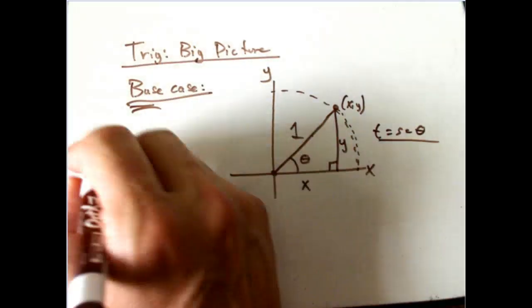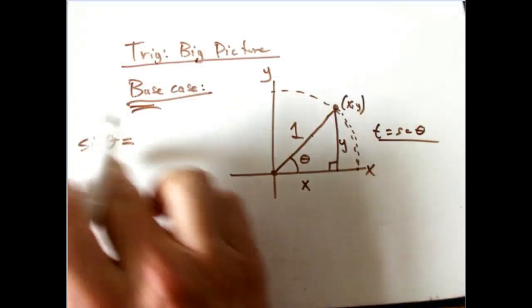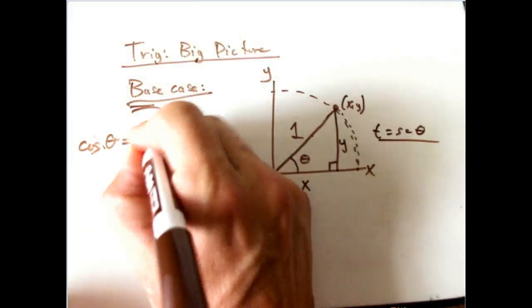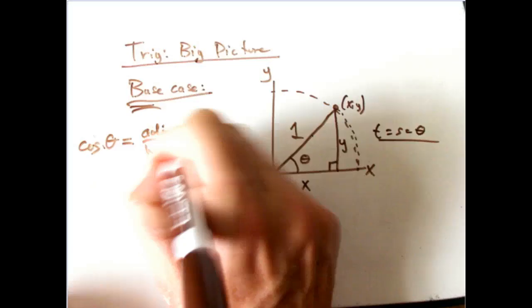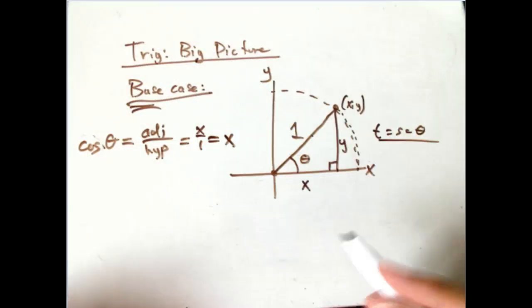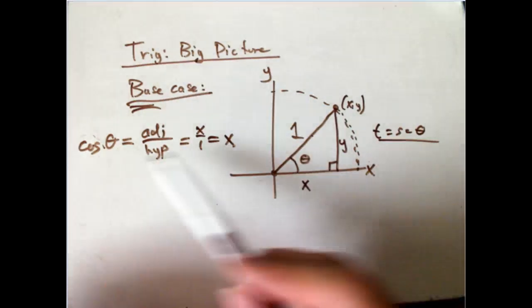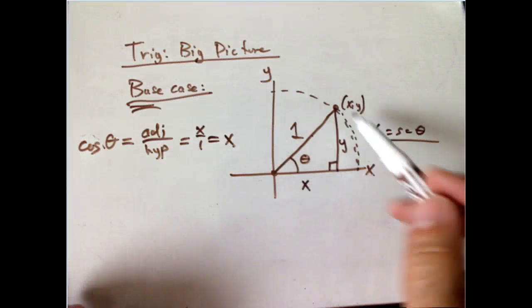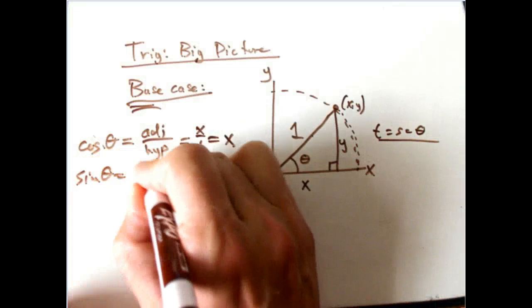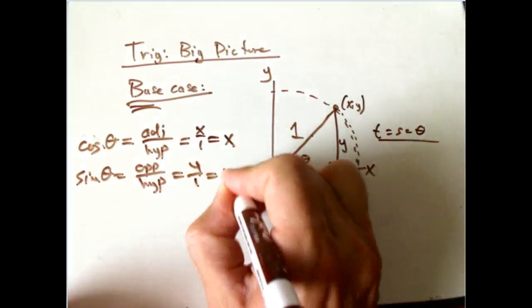And then the definitions, we have sine theta. I'm going to focus just on sine and cosine for right now. Actually, let me do cosine first. Cosine theta is adjacent over hypotenuse, and that's the same as X over 1. And so in this case, it's just X. So this is a definition you would see from triangle trig. This is a definition you'd see from unit circle trig. They are the same in the overlap where both cases are applying. And then sine theta is opposite over hypotenuse or Y over 1 or Y.